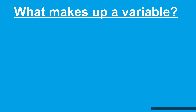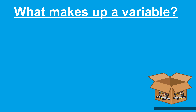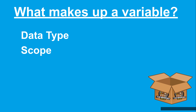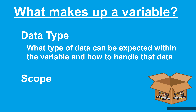There are two aspects to a variable that are important to know about: its data type and scope. A data type is simply a way for WebCore to know what type of data to expect and how to handle that data. This is the same thing as a variable type in several programming languages such as Python.